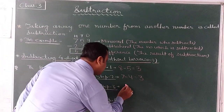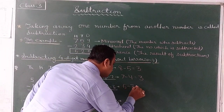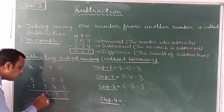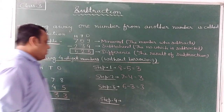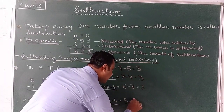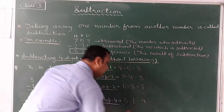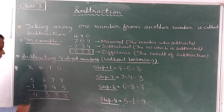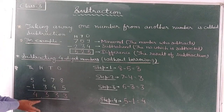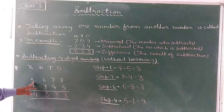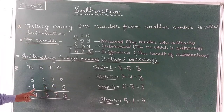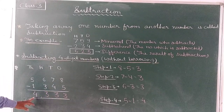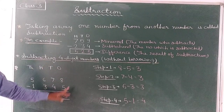In step 3, we subtract the hundreds place: 6 minus 3 equals 3. We write 3 under the hundreds place. In step 4, we subtract the thousands place: 5 minus 1 equals 4. We write 4 here. So the difference is 4,333.